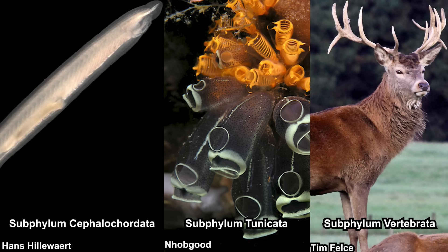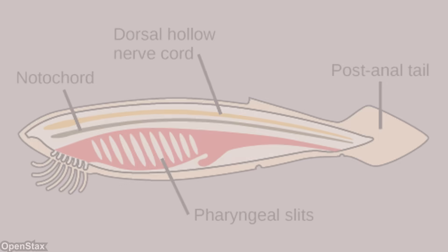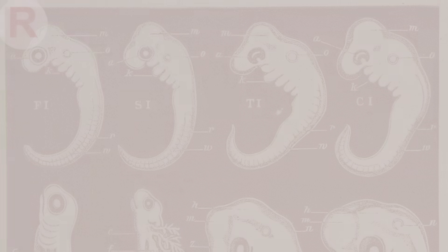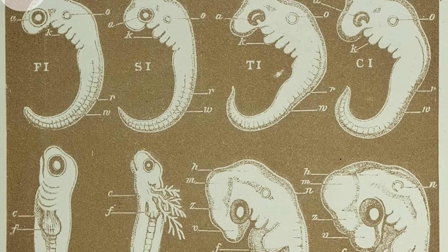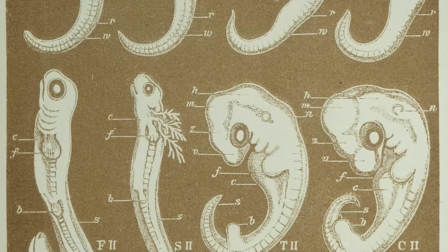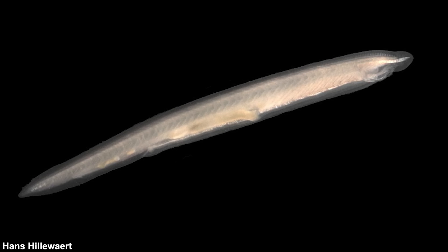Aside from the notochord, there are actually four other traits that group these animals together: dorsal nerve cord, pharyngeal slits, endostyle, and post-anal tail. Of course there are exceptions if you look at the adult form of each chordate, but these traits persist at the early stage of their development — or should I say our development, because mammals are also chordates. Now let's focus on lancelets.